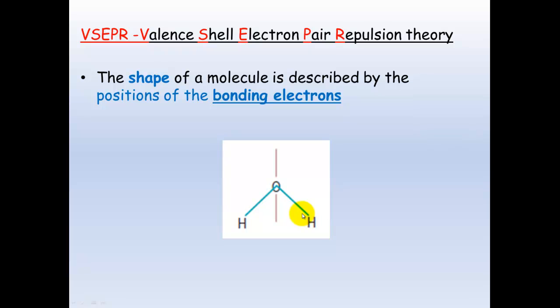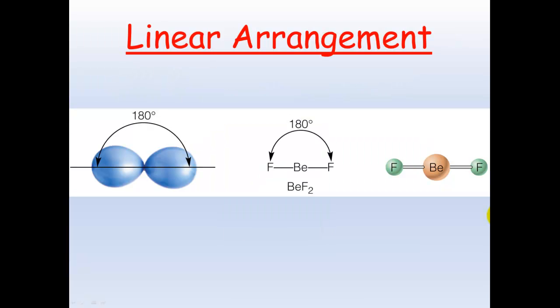It is these bonding electrons that we care about, so we ignore the non-bonding lone pairs. For water here, it shows a v-shape. Here are some of the common examples.